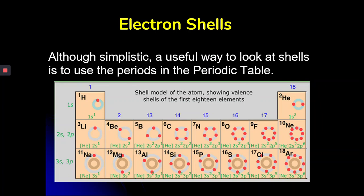Okay, so now we're going to move into the electron cloud and talk about how electrons are actually occupying this space. So first, electron shells. It's very simplistic, but a useful way to look at energy levels or shells is to use the periodic table. The energy level is represented by the row number. So row 1 is the first energy level, row 2 is the second energy level, row 3 is the third energy level, so on and so forth.